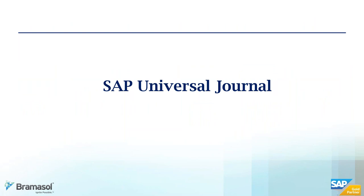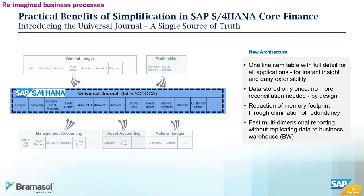When a company moves to S4, what makes all this possible? The concept of the SAP Universal Journal is a critical component in this whole discussion. From a high-level perspective, it's a single source of truth, which is very important from a data integrity perspective, because you have all your transactions for a situation being recorded in that Universal Journal. That is one of the key features of what happens when a company moves to S4.